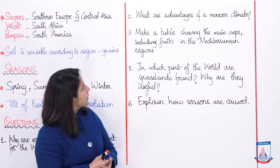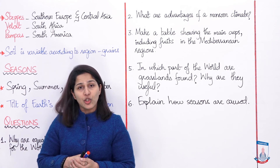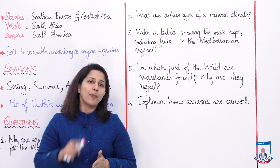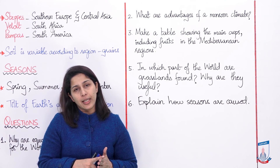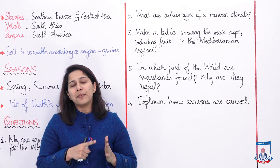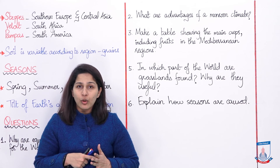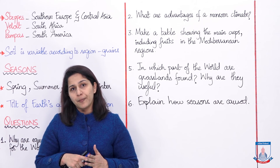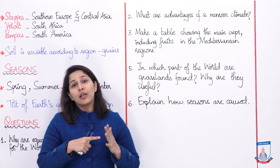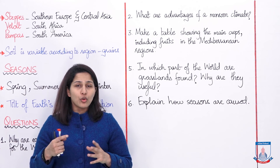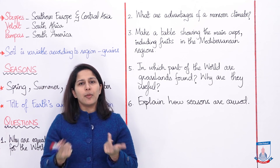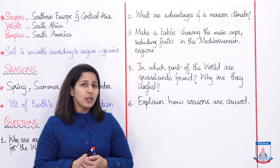Make a table showing the main crops including fruits in the Mediterranean regions. When we discussed Mediterranean climate, go back to the past lecture, pause the video, and listen again. There I told you the different fruits like grapes, lemons, peaches, apricots, and oranges that are grown in the Mediterranean regions, plus vegetables like tomatoes and asparagus, and the wood which is also used for commercial purposes. Take that list and draw a table with two columns — write the names of the fruits and vegetables grown there and the uses they can be used for.